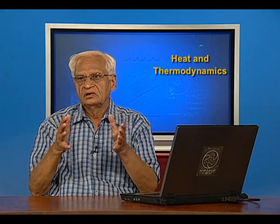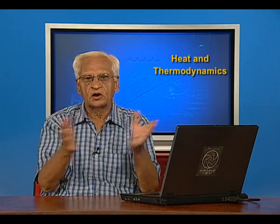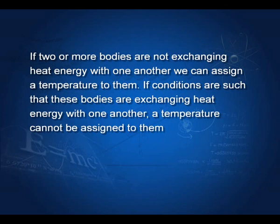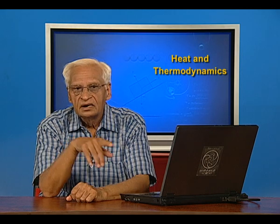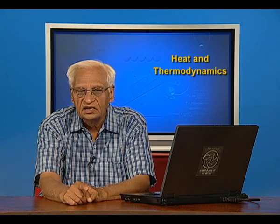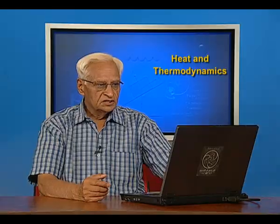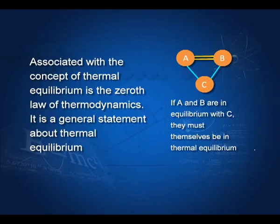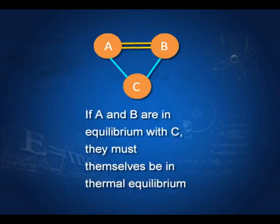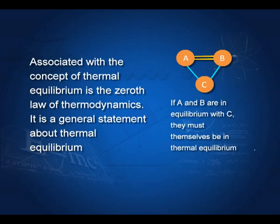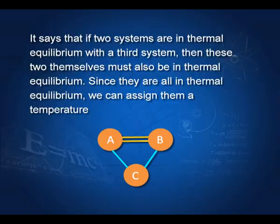In this room, if the gas and other things are not exchanging heat, they are all in equilibrium and I can assign temperature to them. Remember, temperature is a bulk property — it can be assigned only to a very large assembly of particles, not to individual particles. Associated with thermal equilibrium is the zeroth law of thermodynamics: if body A is in thermal equilibrium with C, and body B is also in thermal equilibrium with C, then A and B themselves must also be in thermal equilibrium. If all three are in equilibrium, I can assign a temperature to them.